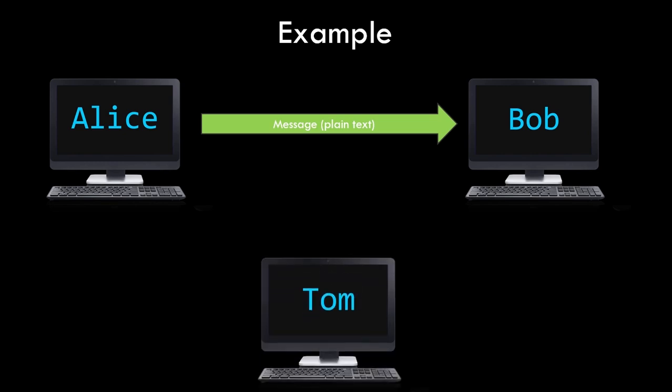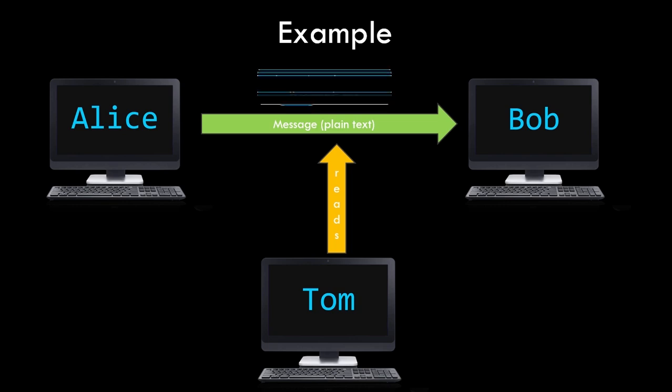Just as Alice and Bob are having a conversation over the network, there is this third fellow, Tom, who is on the same network as well. As the data flow in the network is open to everyone on that network, Tom can monitor or inspect what data is being transferred from Alice to Bob. Since Alice sends the mail as plain text without any encryption or encoding, Tom can see the content of the message directly. Now think if Alice sends her bank account number and password in such a way to Bob — Tom gets those details.